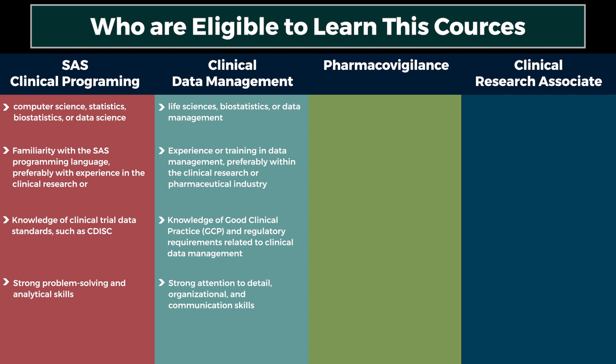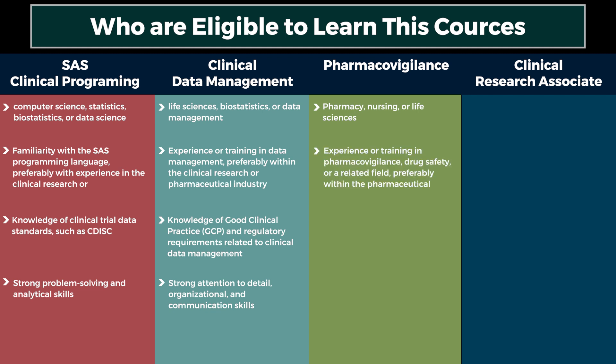For Pharmacovigilance Specialist: a Bachelor's or Master's degree in a relevant field such as Pharmacy, Nursing, or Life Sciences; experience or training in pharmacovigilance, drug safety, or a related field, preferably within the pharmaceutical industry; knowledge of pharmacovigilance regulations, guidelines, and best practices; and strong analytical, communication, and problem-solving skills.